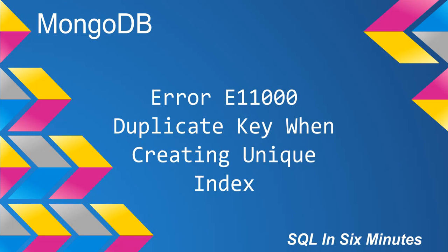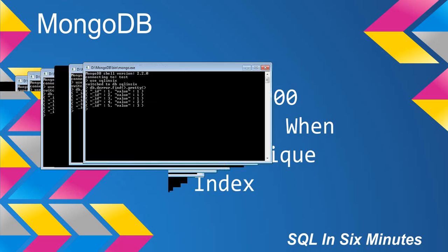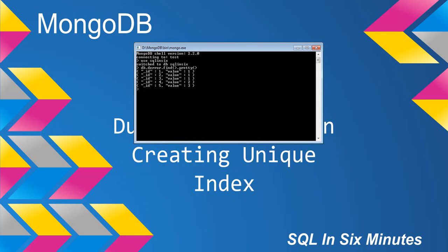This morning we're going to learn about error E11000, duplicate key error when creating a unique index. One of the things we've learned in this playlist when it comes to Mongo is that it will prevent us from adding a value that's already in existence when it's the ID field. The ID field is a unique index.